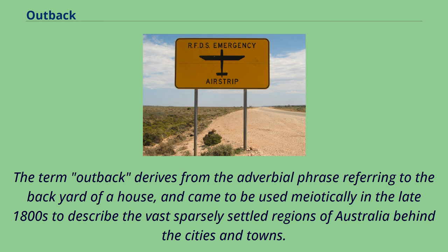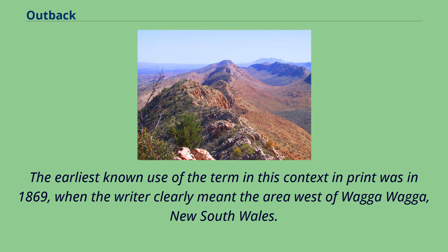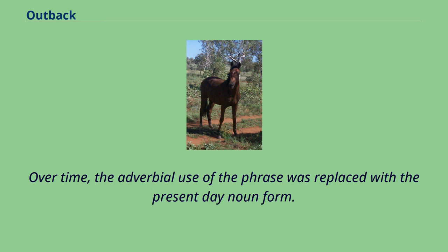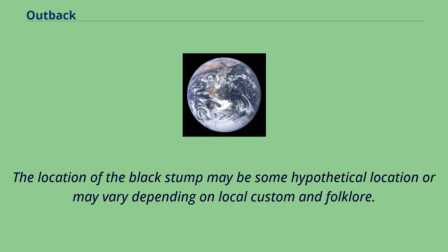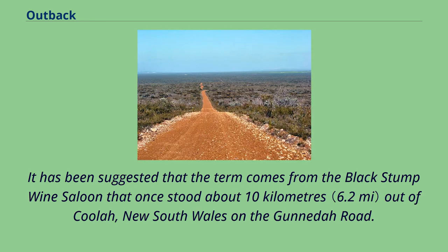The term 'outback' derives from the adverbial phrase referring to the backyard of a house, and came to be used in the late 1800s to describe the vast sparsely settled regions of Australia behind the cities and towns. The earliest known use of the term in print was in 1869, when the writer clearly meant the area west of Wagga Wagga, New South Wales. Over time, the adverbial use of the phrase was replaced with the present-day noun form. It is colloquially said that the outback is located beyond the Black Stump — which may be some hypothetical location or may vary depending on local custom and folklore. It has been suggested that the term comes from the Black Stump Wine Saloon that once stood about 10km out of Coolah, New South Wales on the Gunnedah Road.